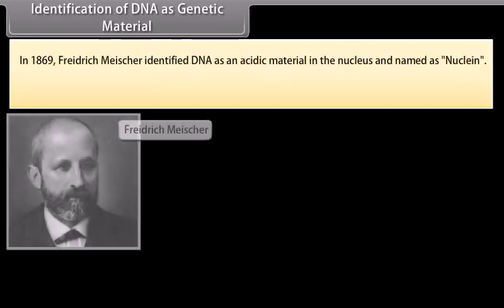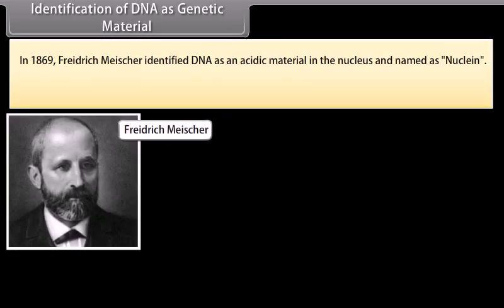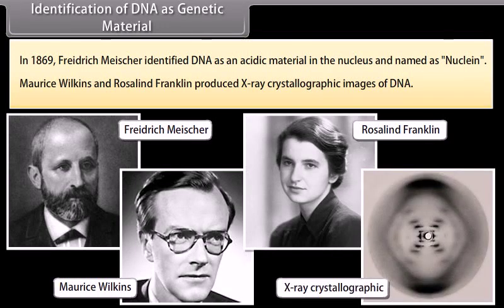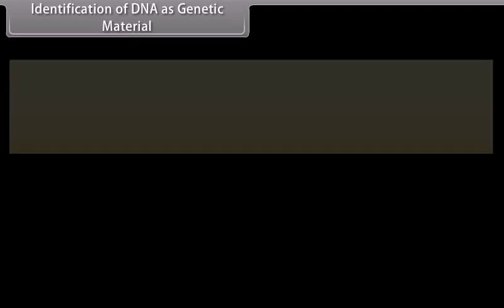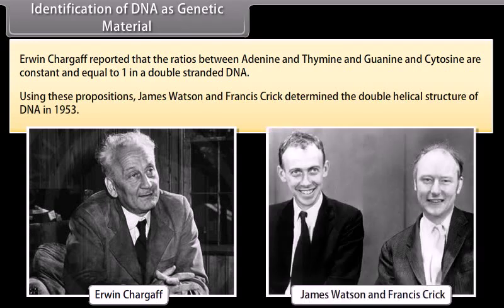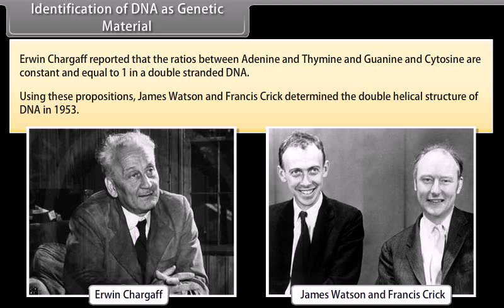Identification of DNA as genetic material. In 1869, Frederick Miescher identified DNA as an acidic material in the nucleus and named it nuclein. Morris Wilkins and Rosalind Franklin produced X-ray crystallographic images of DNA. Erwin Chargaff reported that the ratio between adenine and thymine, and guanine and cytosine, are constant and equal to 1 in a double-stranded DNA. Using these propositions, James Watson and Francis Crick determined the double helical structure of DNA in 1953.